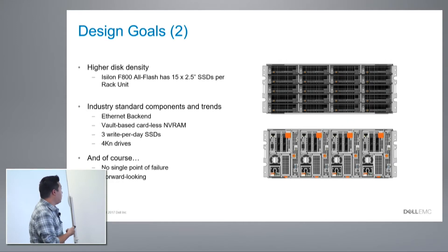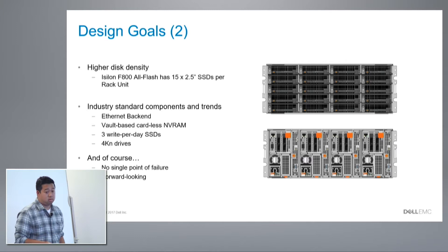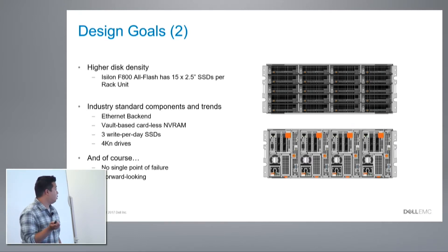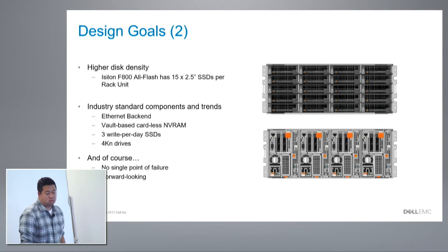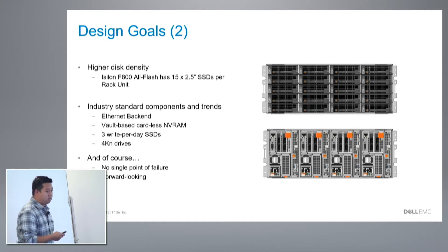The other things we're looking for are industry standard components and trends: an Ethernet backend — previous Isilon platforms were primarily InfiniBand — and vault-based cardless NVRAM. In the older platforms we had NVRAM cards; the journal in this case is in system DRAM. We also have three writes-per-day SSDs and 4Kn drives, no single point of failure, and a forward-looking platform.